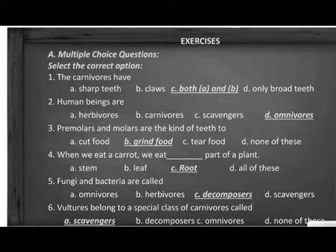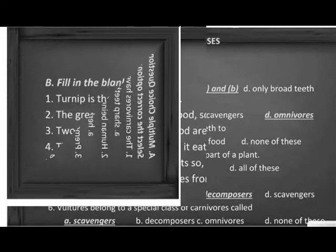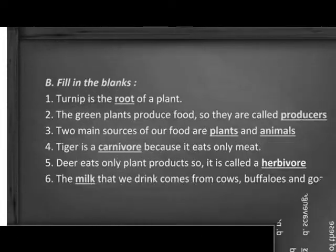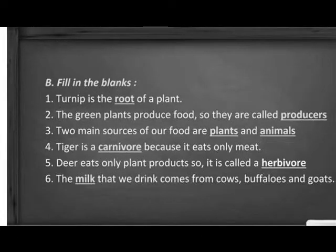Scavengers. The green plant produces food, so they are called producers. So many sorts of food are plants and animals. Tiger is a carnivore because it only eats meat. Plants only produce, so it is called a herbivore.